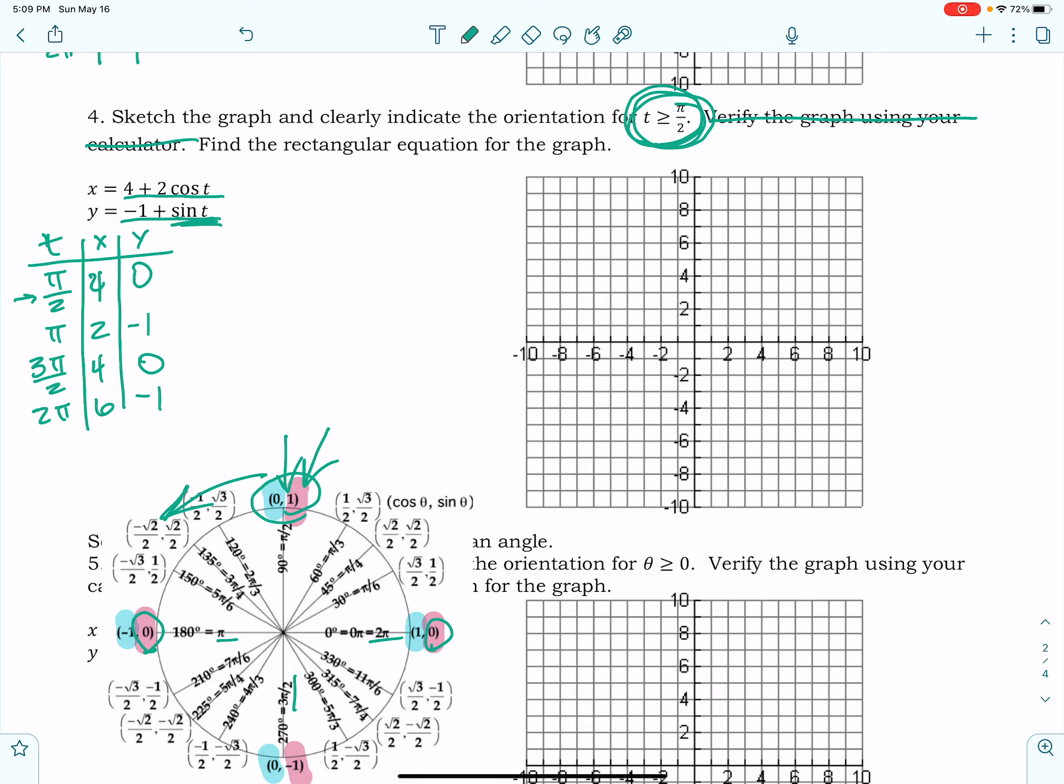So I'm going to graph my ordered pairs. So at 4, 0, that is my initial point. And then at 2, negative 1, right there, at 4, 0.